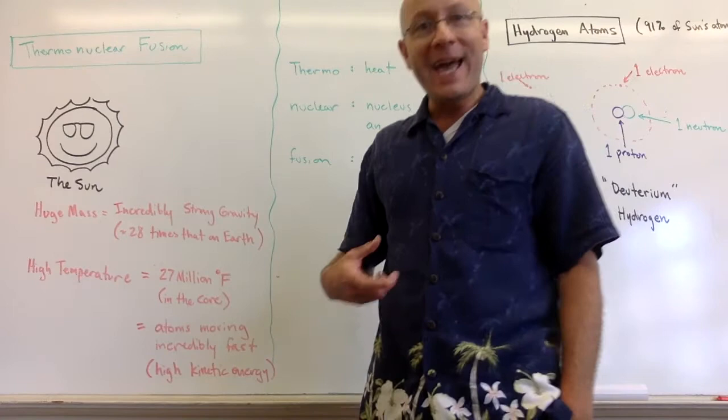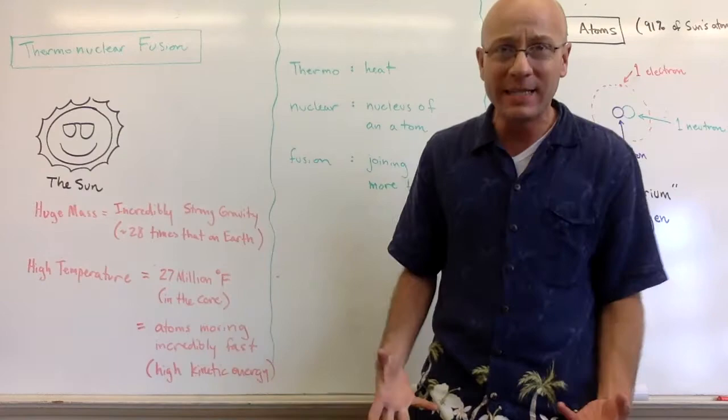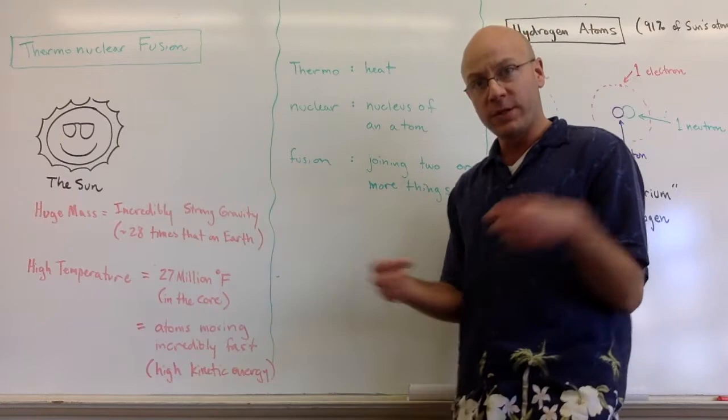So let's talk a little bit about the sun. First off, we know that the sun has a huge mass. The sun is humongous, very heavy, very massive. Because of that, it has an incredibly strong gravitational field. There is a lot of gravitational force bringing all the items toward the center of the sun.